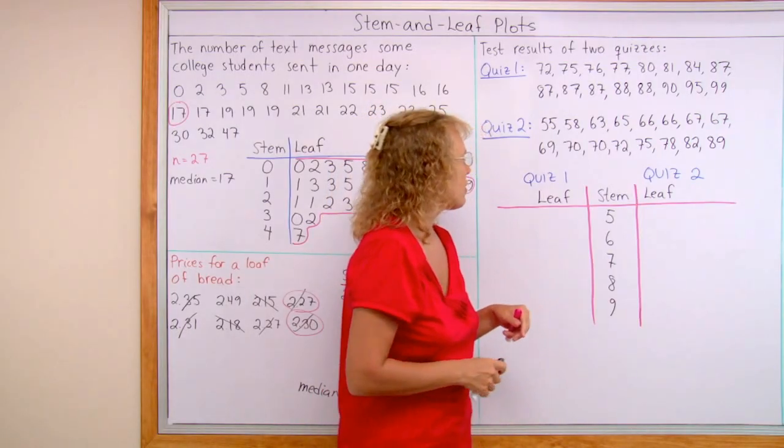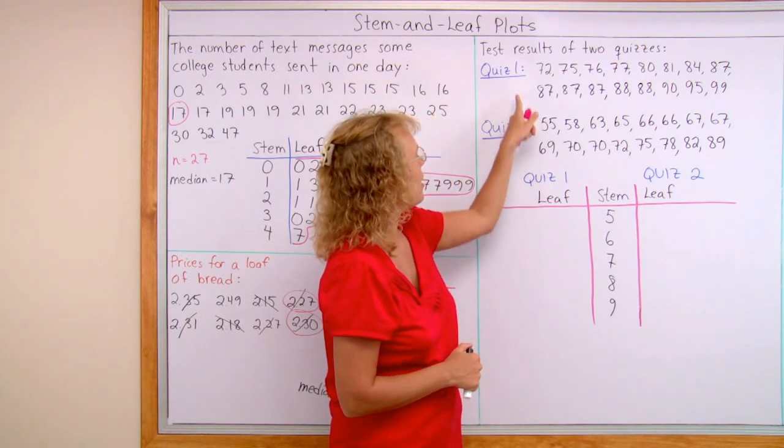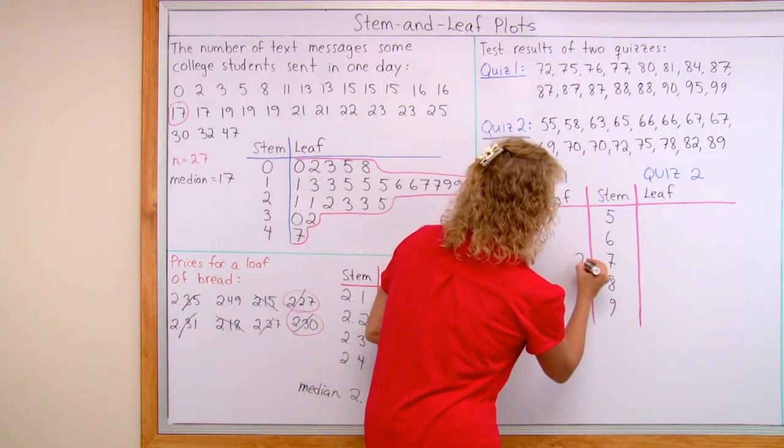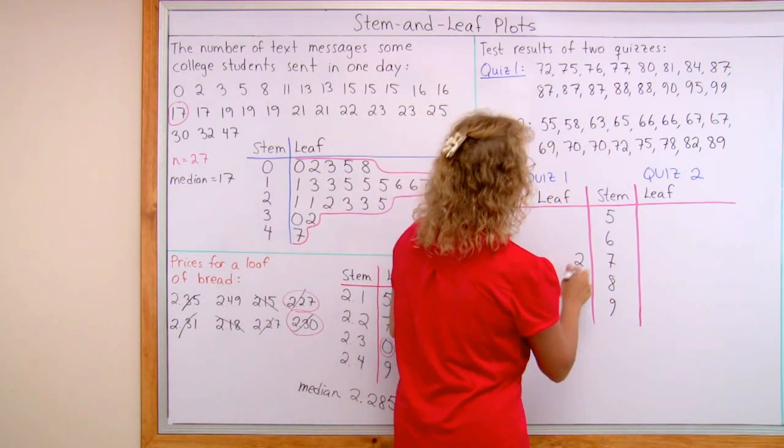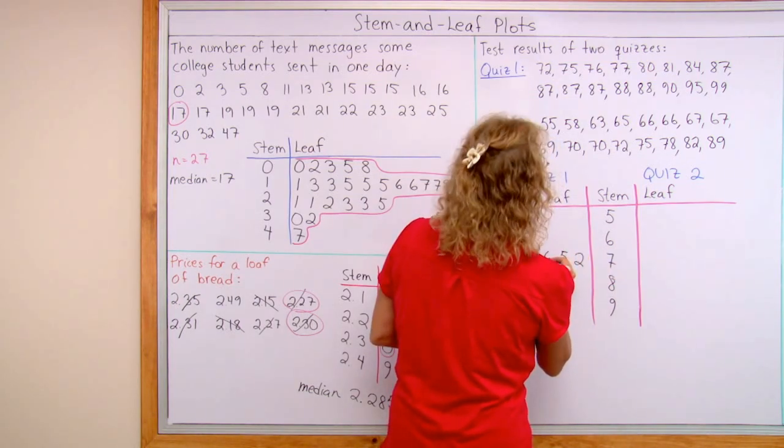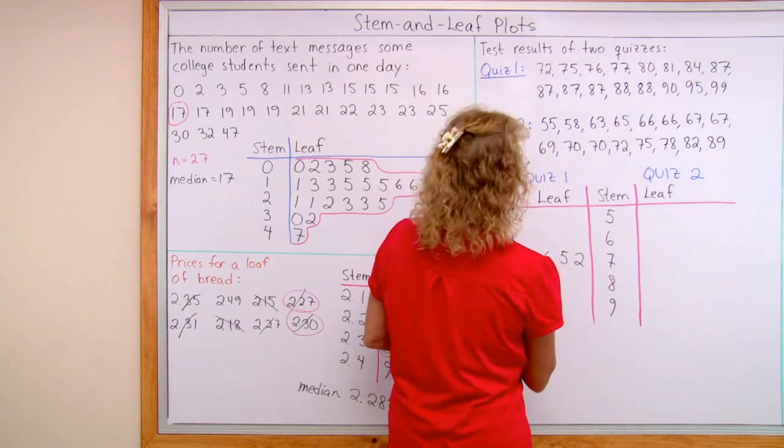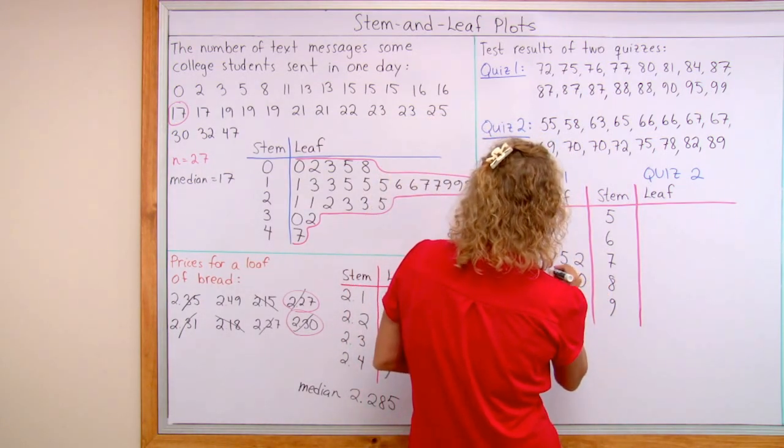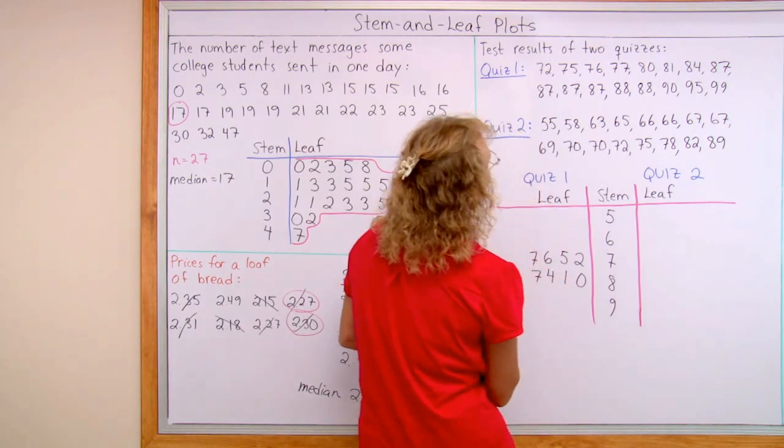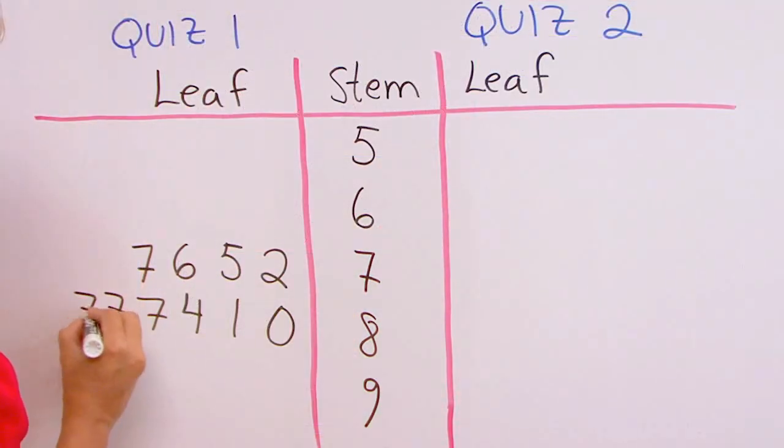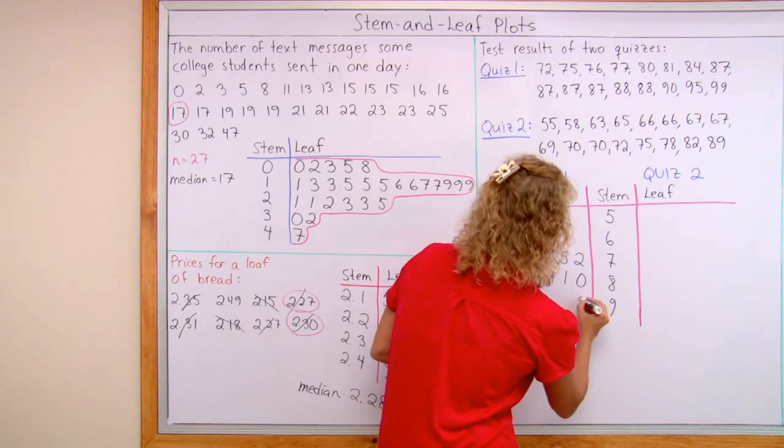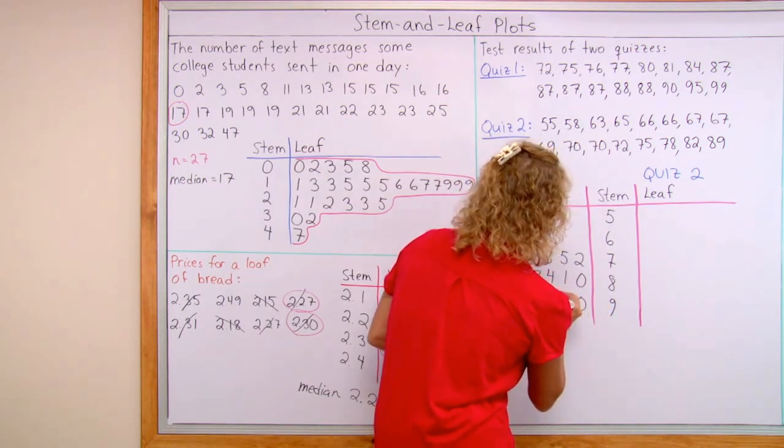And now the leaves for quiz one, I will start with 72. So it's here, 70, and then the leaf goes here. So this is 72. And then 75, 76, and 77. Next one is 80, 81, 84, 87, and then lots more. And two eights, almost running out of space. And then 90, and then five and nine.